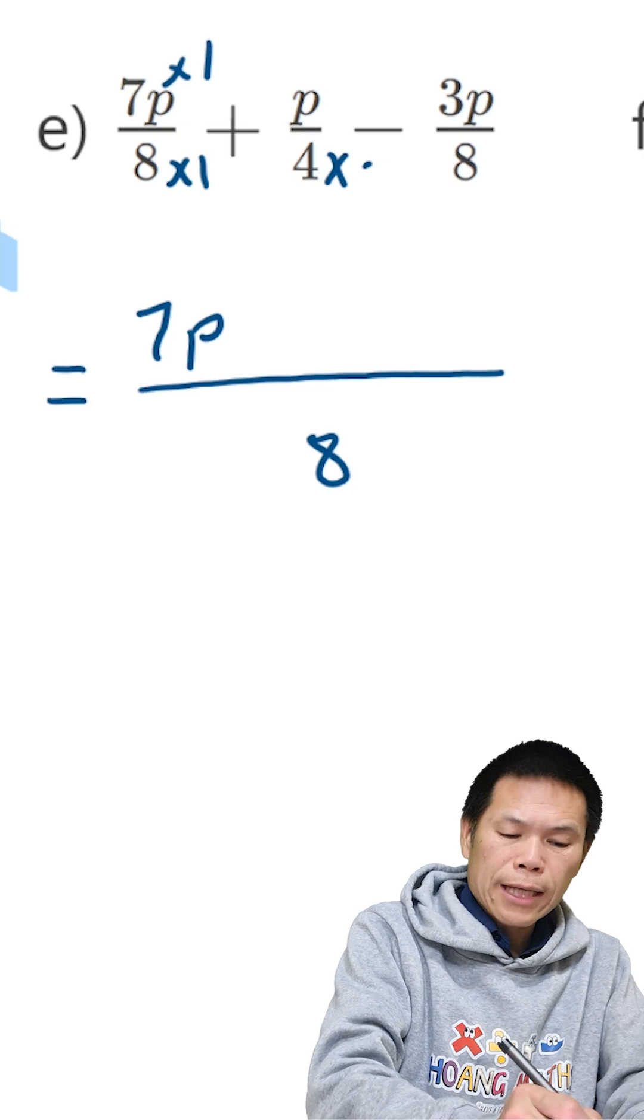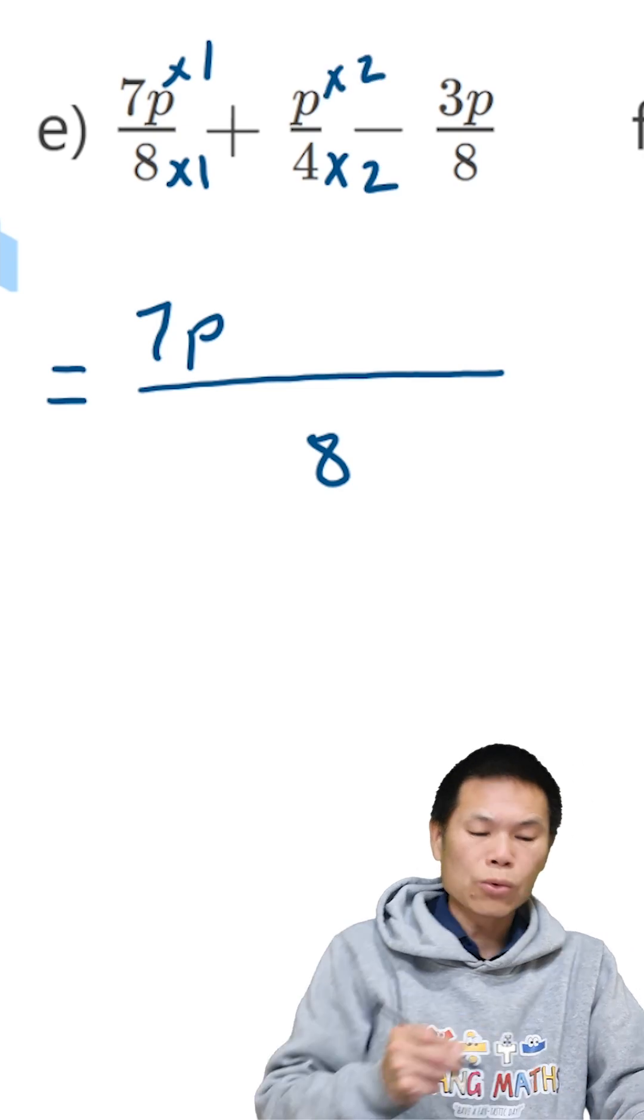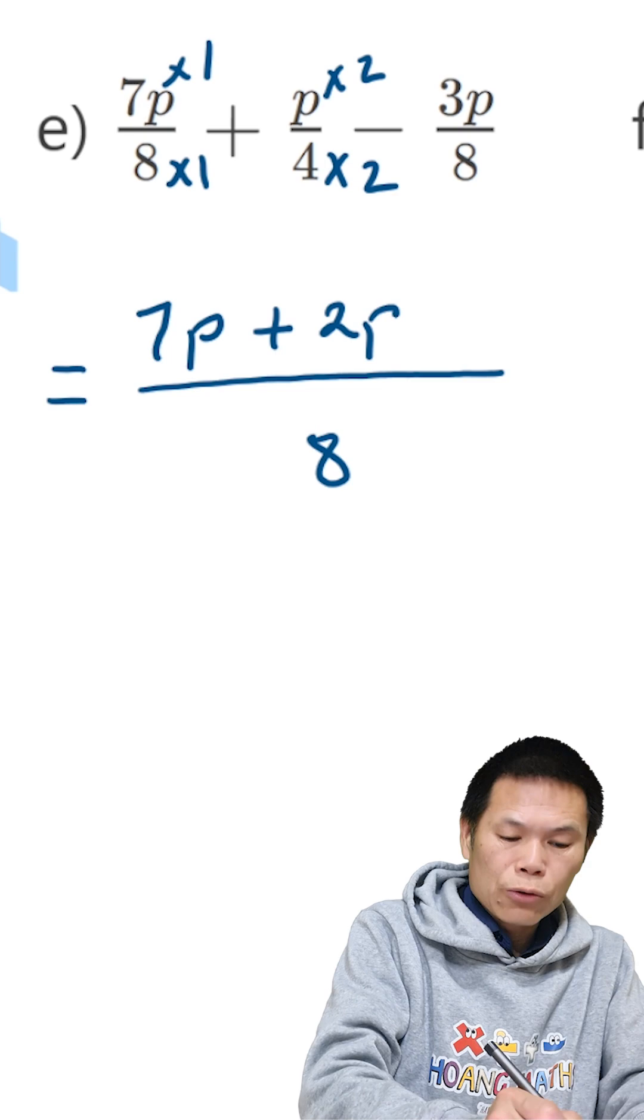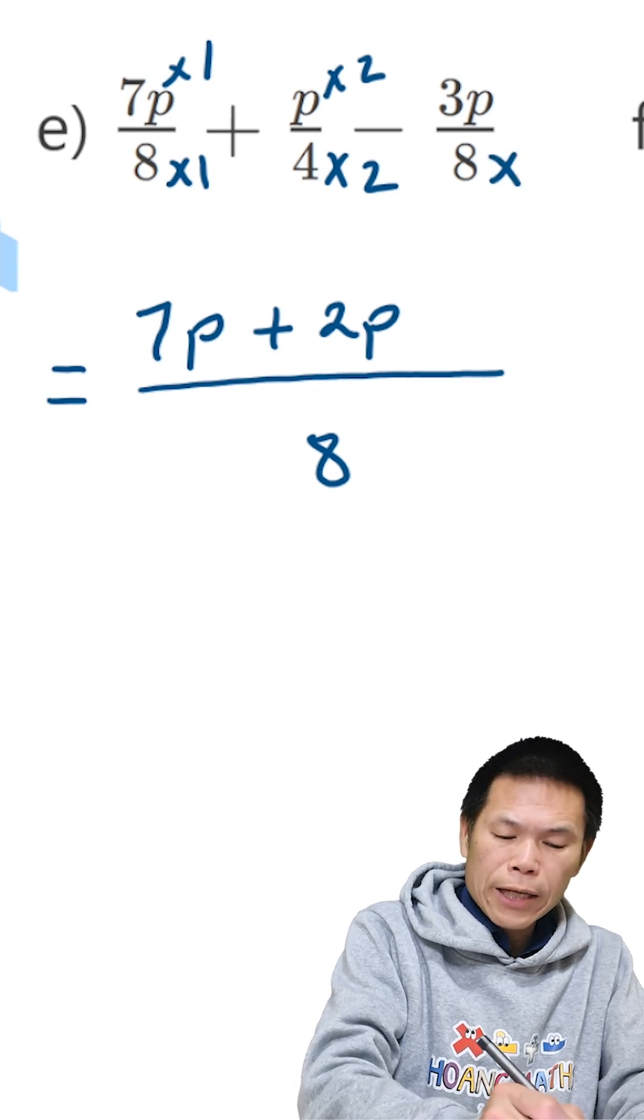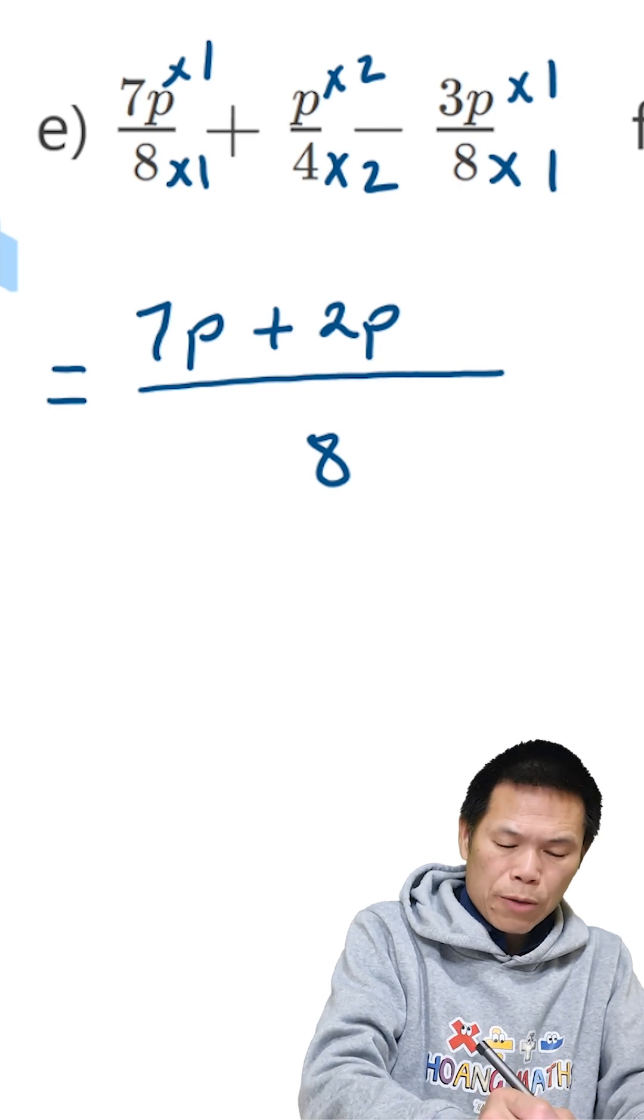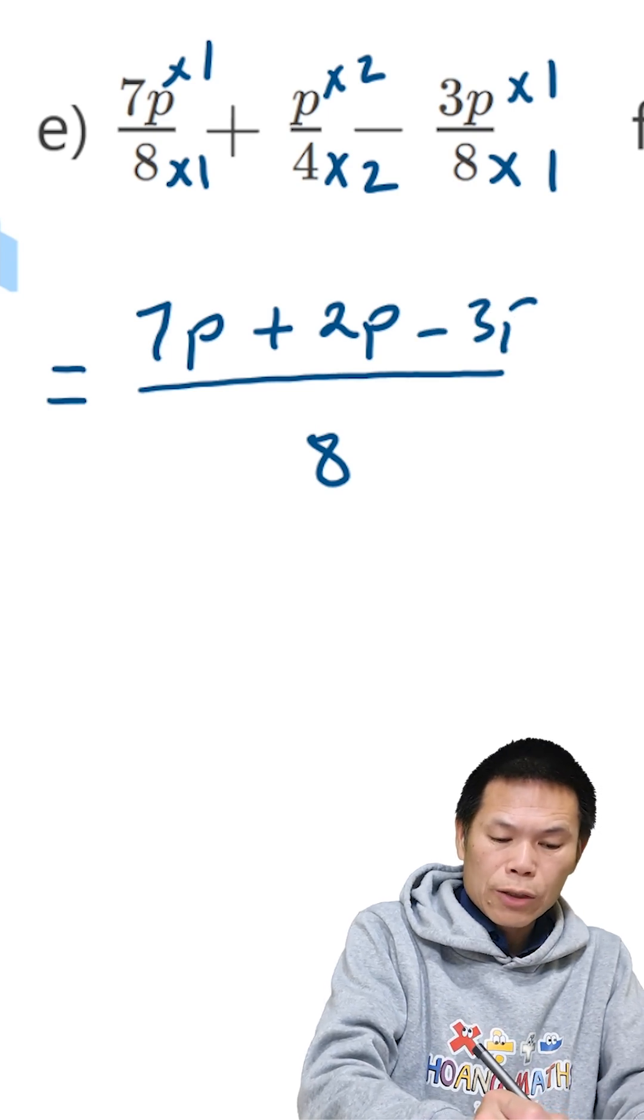So from 4 to 8, I times 2. This is time 2. So that becomes 2P. So we add 2P. And from 8 to 8, I time 1. So this is time by 1. So that gives me 3P. So minus 3P.